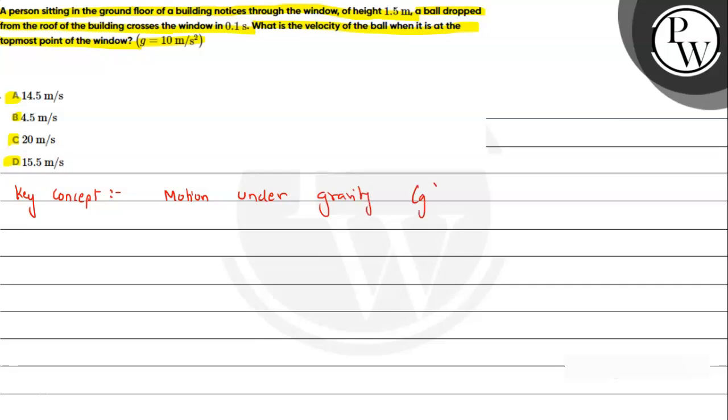Let's suppose this is the window and here the observer is standing and observing that a ball is coming from above. It has been dropped so initial velocity is zero.